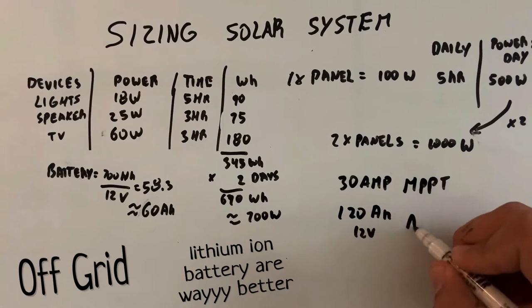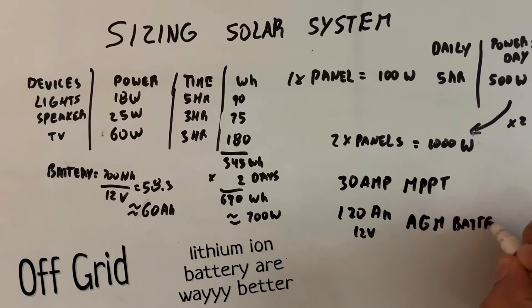Now remember that the AGM has a 50% discharge, depth of discharge. So for 60 amp hour requirements, we got to double that to 120 amp hours.